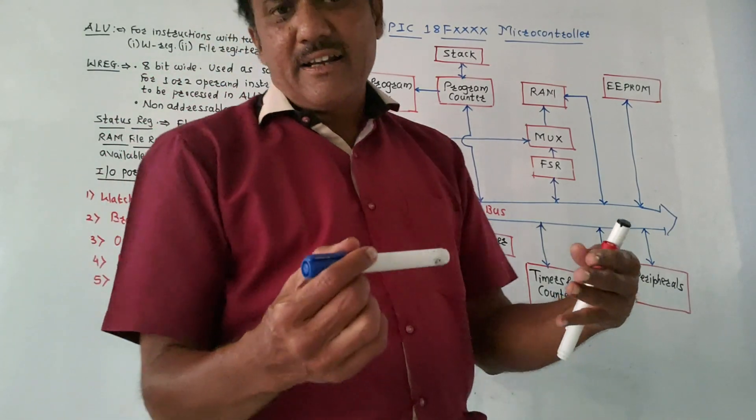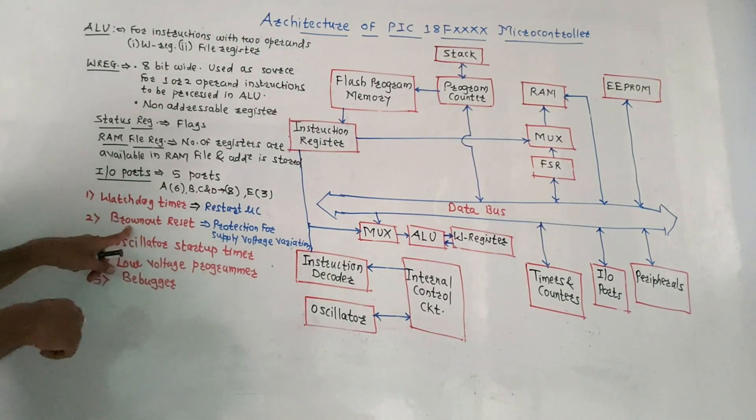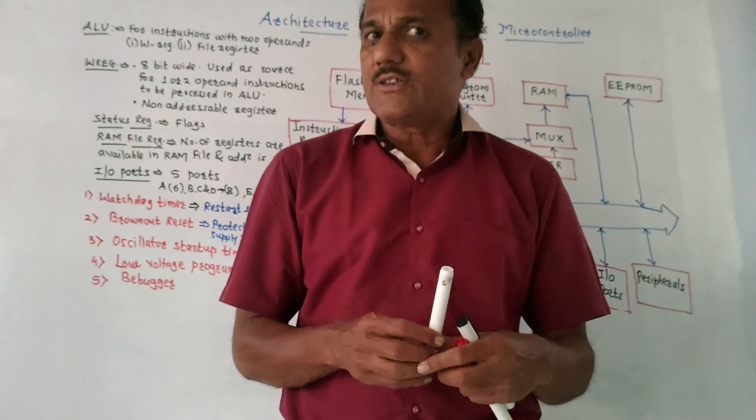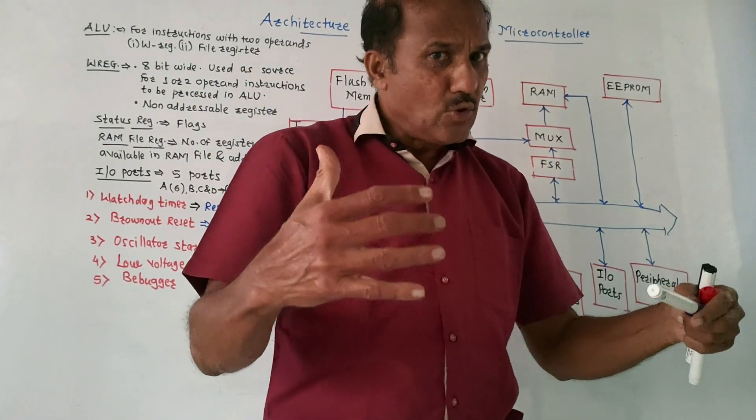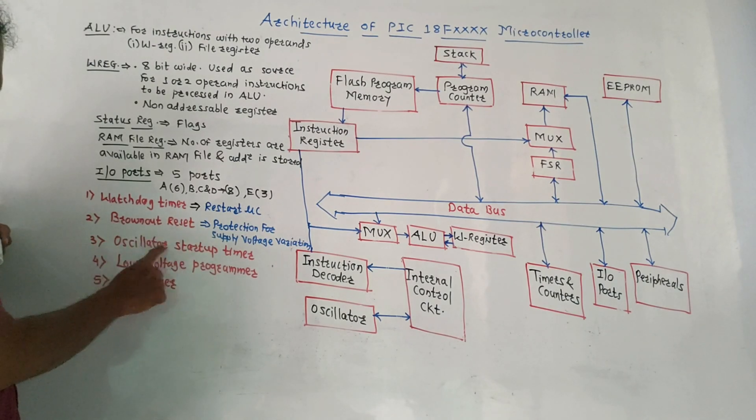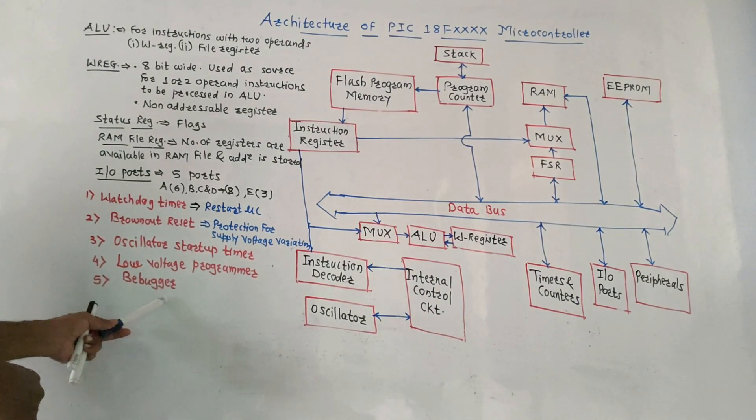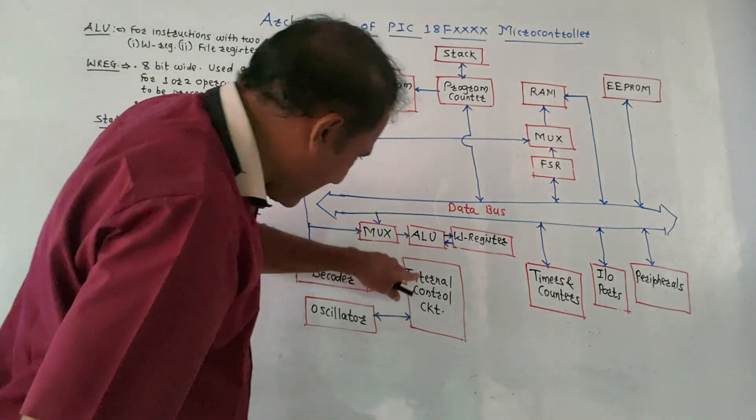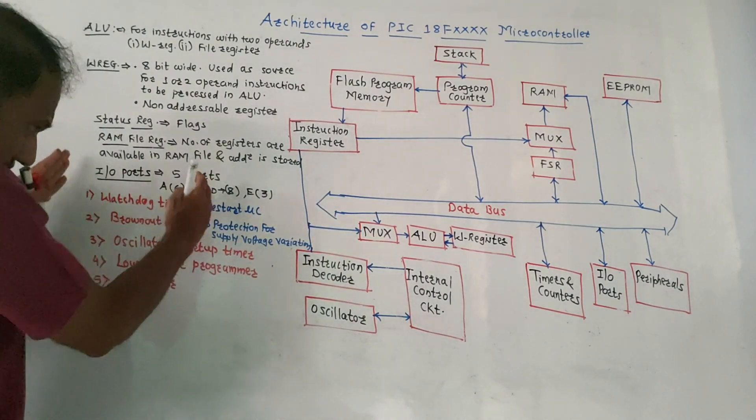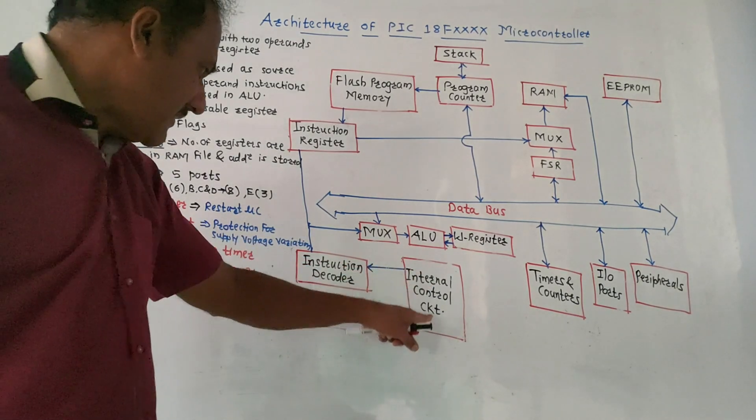Brownout reset is used to give protection to the microcontroller whenever there is voltage fluctuation. If there is low voltage, it should not hamper the microcontroller. Then oscillator, oscillator start up timer, low voltage programmer and debugger - these 5 blocks are contained in internal control circuit. If you draw block diagram, instead of writing internal control circuit, you can create 5 blocks here.